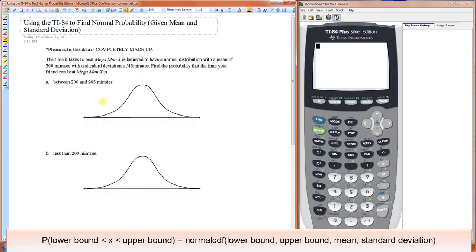To be able to do this, you only need to know four things. You need to know the mean, the standard deviation, the lower bound, and the upper bound of the range that you're looking for. Here we know the mean is 300 minutes and the standard deviation is 45. Now it is very important that it's a normal distribution. You can only use this function in your calculator if it is a normal distribution.